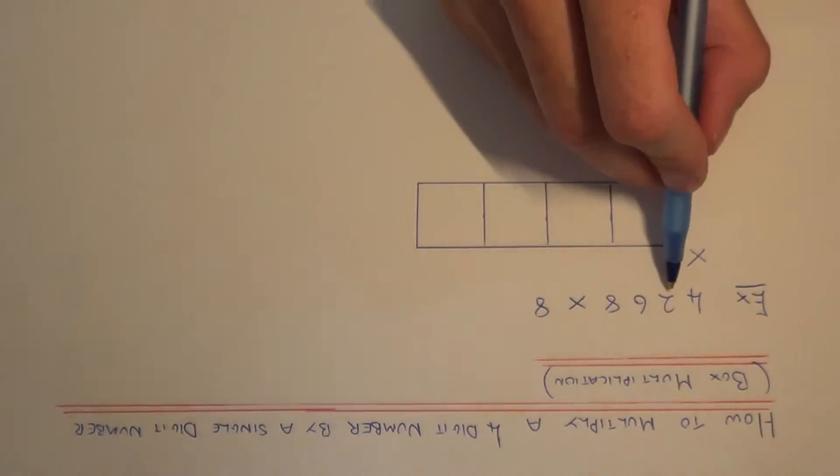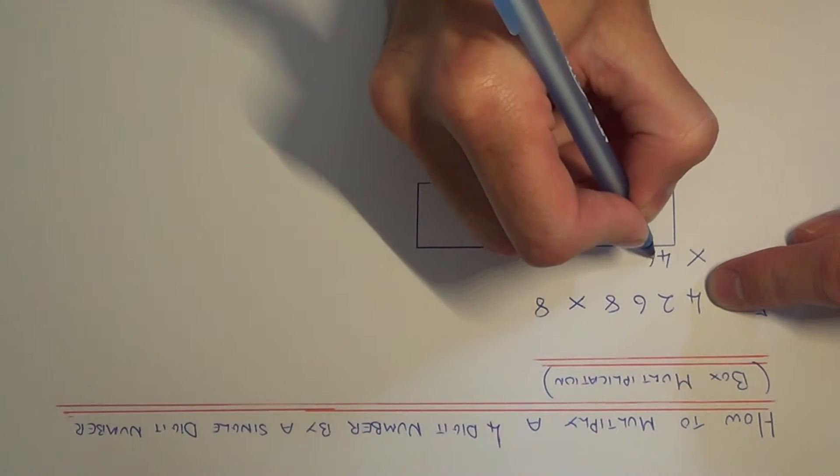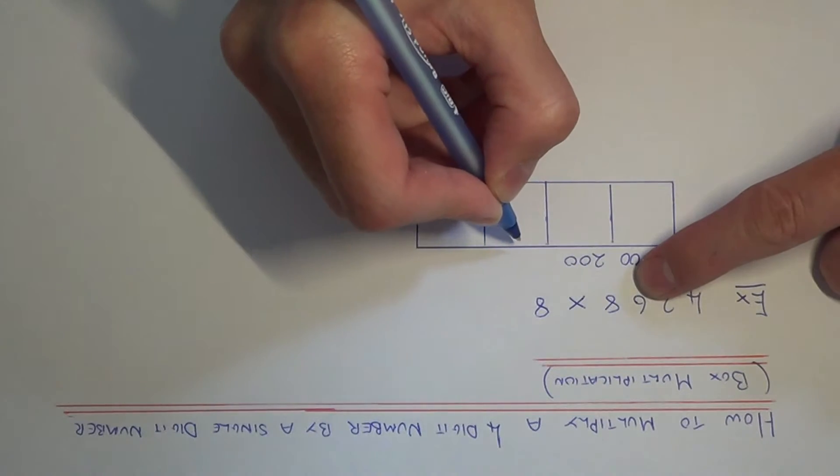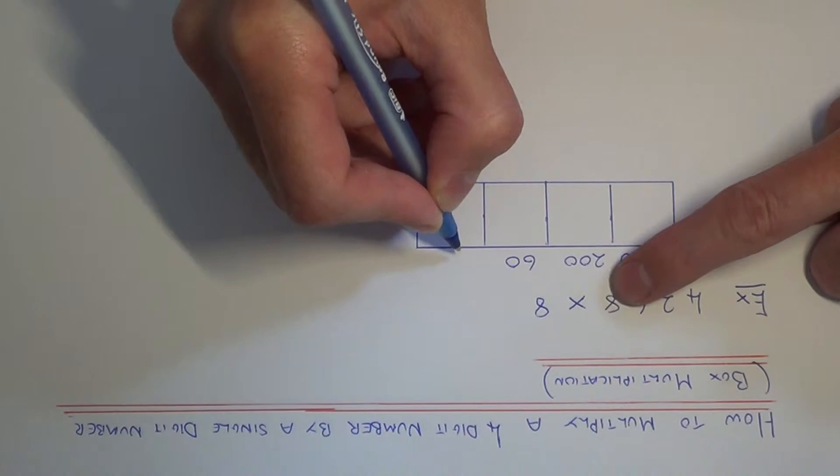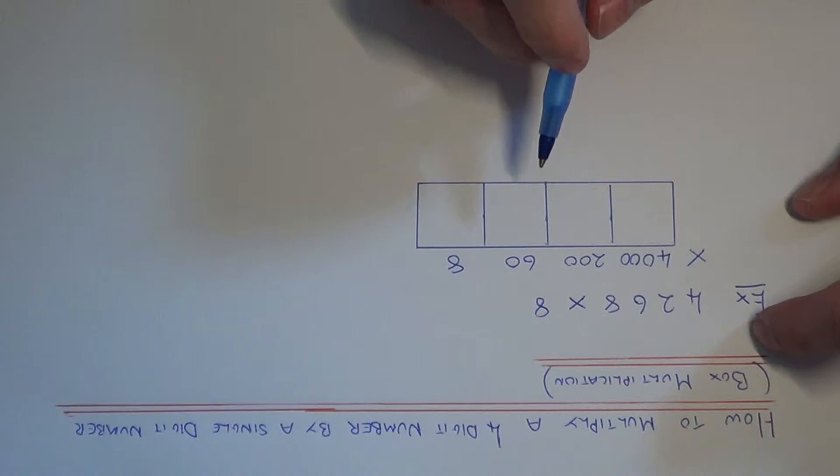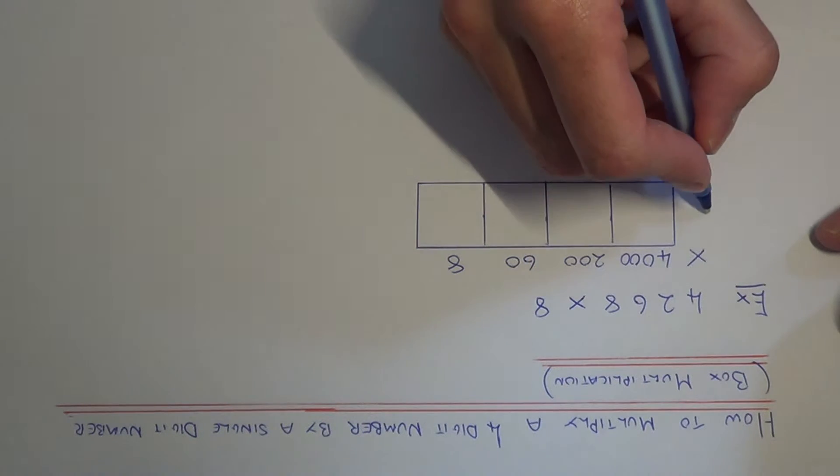We've got 4,268, so we have 4,000, 200, 60, and 8 units. So if we write these along the top of our box, and the number that we're going to multiply by is the number 8.